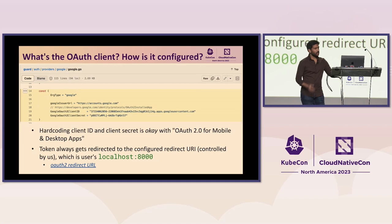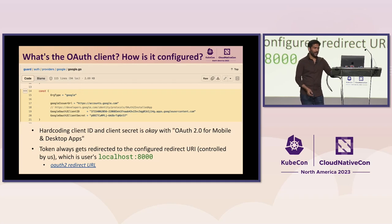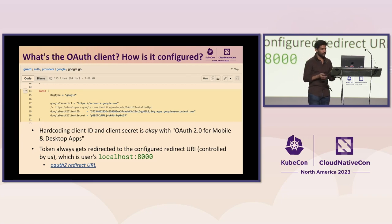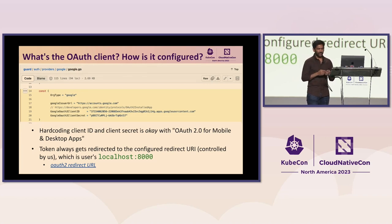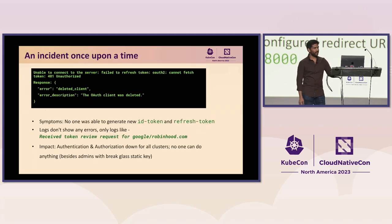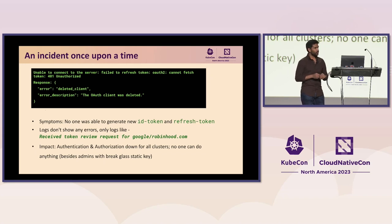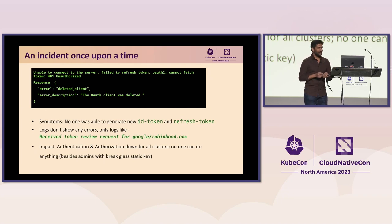The client ID and secret are hardcoded, which means the OAuth client is a single point of failure. And with any single point of failure, if it goes down, it takes down everything — which is exactly what happened. All of our users started reporting they couldn't fetch the token or run any kubectl commands. The error, very descriptively, was 'the OAuth client was deleted.'